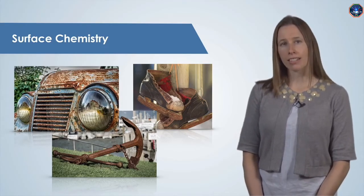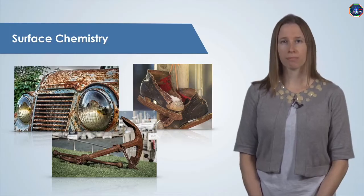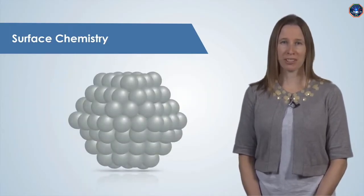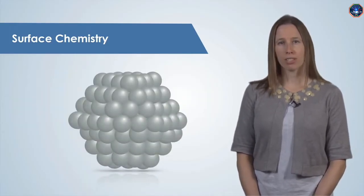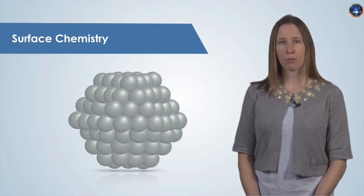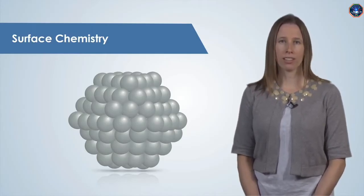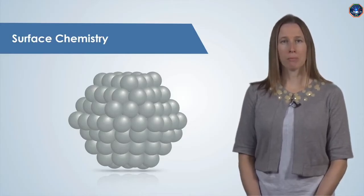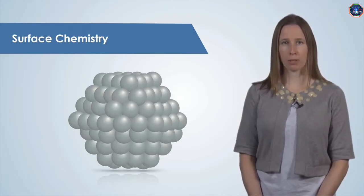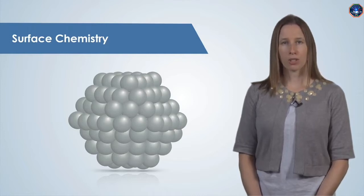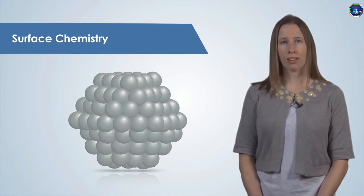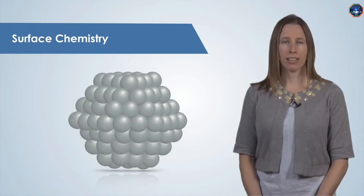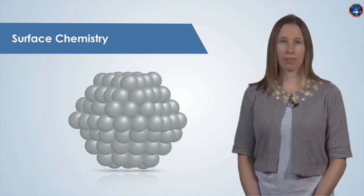Therefore, understanding surface chemistry is important, especially for nanoparticles. As the size of a material decreases, a larger percentage of the atoms are found at the surface. When working with nanoparticles, the properties of the material can be dominated by the surface properties. The nanoparticle shown here has a total of 147 atoms, and 62% of them are at the surface.